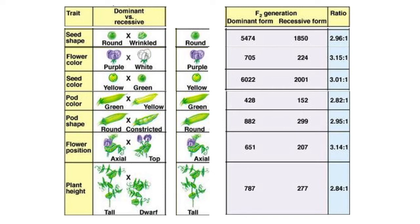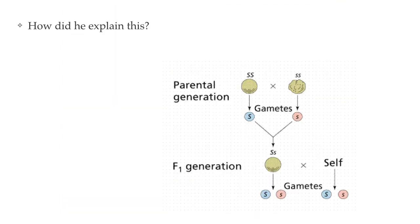He repeated that same experiment with all the other traits and found that he would get that 3 to 1 ratio over and over again. For example, after the first generation round crossed with wrinkled, he self-fertilized the round seeds and got a 3 to 1 ratio of round to wrinkled. The same thing happened when he self-fertilized the purple flower — purple crossed with purple gave a 3 to 1 ratio of purple to white. And with plant height, tall crossed with dwarf gave all tall in the first generation, and self-fertilizing gave a 3 to 1 ratio of tall to dwarf. The second trait that wasn't apparent after the first crossing appeared after the second generation — essentially, certain traits skip a generation.